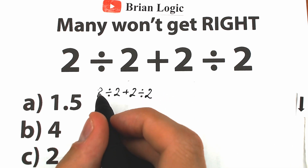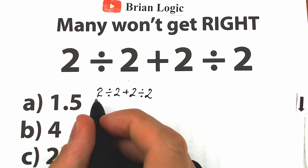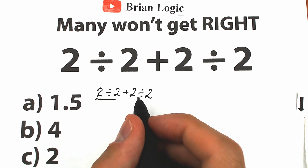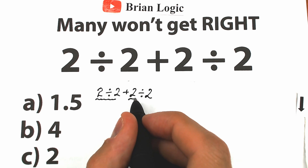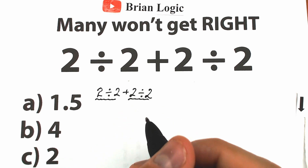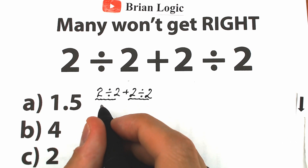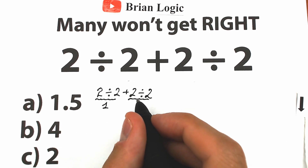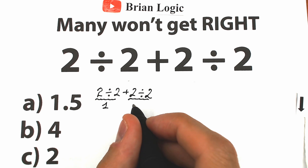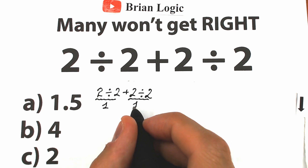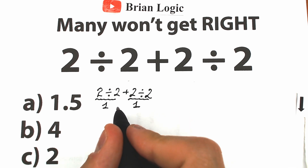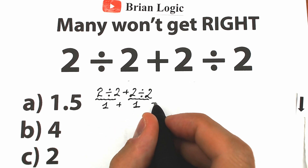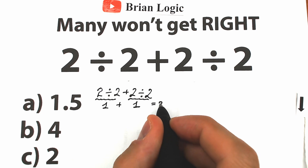If you look closely, we have division on the left side and the same division on the right side. We know that 2 divided by 2 equals 1, and 2 divided by 2 also equals 1. With the addition in the middle, we get 1 plus 1, which equals 2.